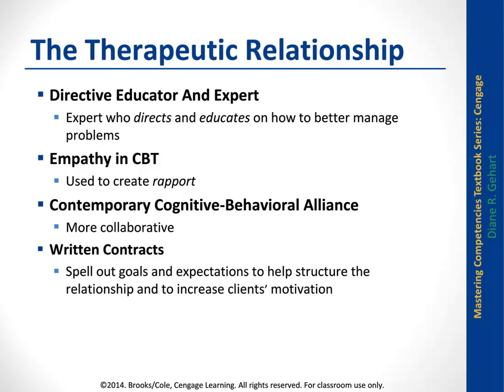ABC theory from Albert Ellis can also be used with couples and families — looking at the activating event and the consequence, then going back to identify the belief that mediates those two. The activating event could be your spouse saying something with what you perceive to be a tone in their voice, so you respond with a snarky comment, and then the therapist goes back to identify the belief that mediates those two — such as 'I don't think my partner respects me.' That type of cognitive behavioral analysis can also be used in CBFT.